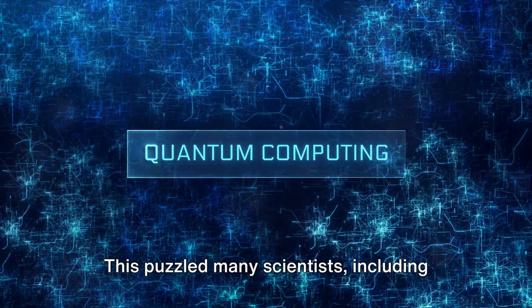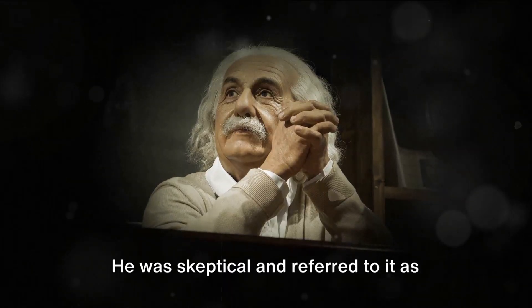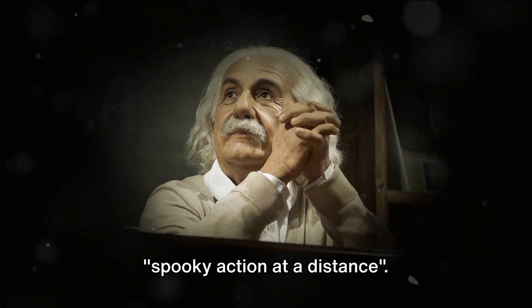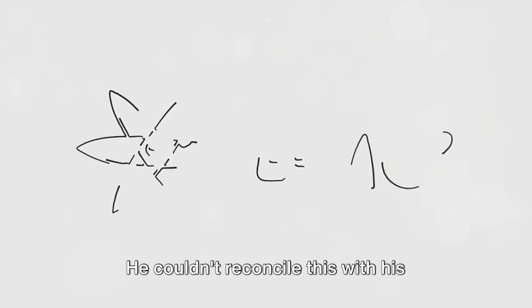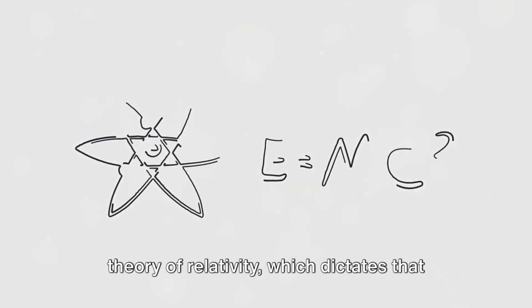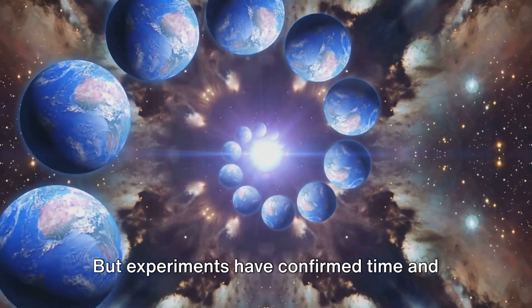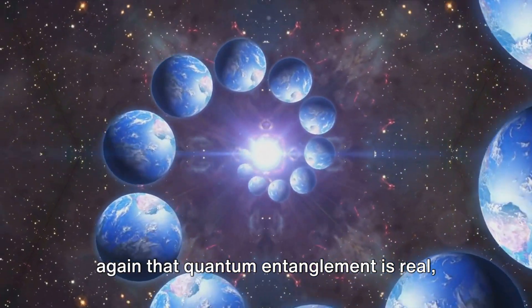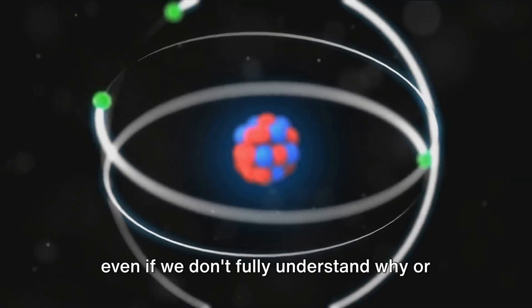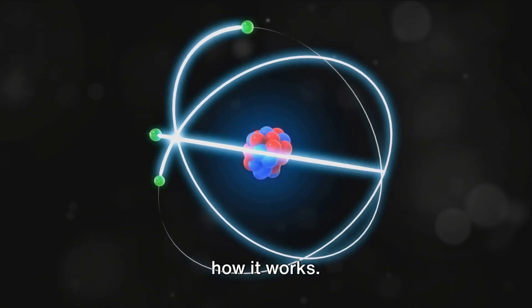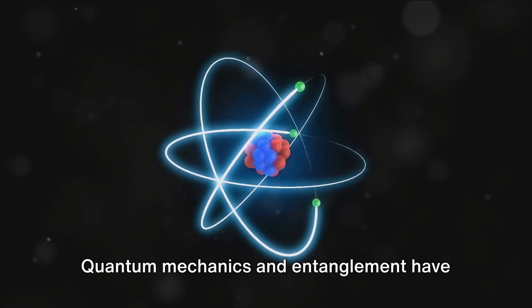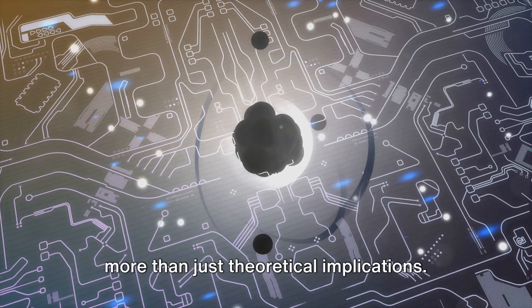This puzzled many scientists, including Albert Einstein. He was skeptical and referred to it as spooky action at a distance. He couldn't reconcile this with his theory of relativity, which dictates that nothing can travel faster than light. But experiments have confirmed time and again that quantum entanglement is real, even if we don't fully understand why or how it works.